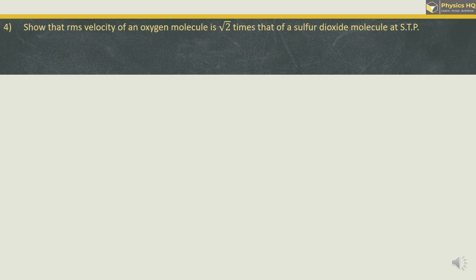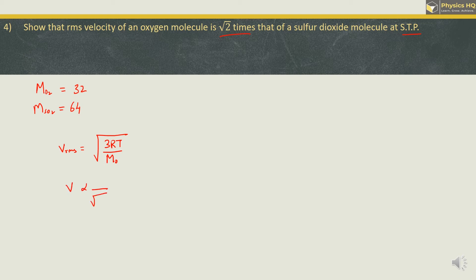Show that the RMS velocity of an oxygen molecule is √2 times that of a sulfur dioxide molecule at standard temperature and pressure. The molecular mass of oxygen is 32 and for sulfur dioxide it is 64. The RMS velocity formula is V_rms = √(3RT/M), so velocity is inversely proportional to the square root of molecular mass.